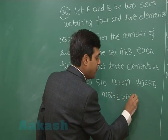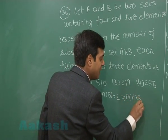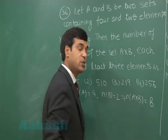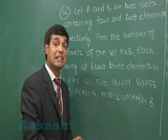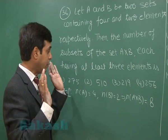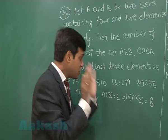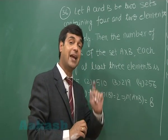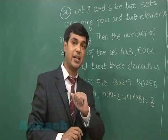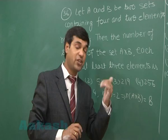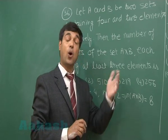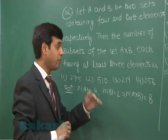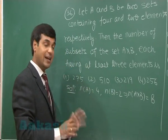Hence, the number of elements in A cross B is 4 into 2, which equals 8. Now, subsets of A cross B having at least three elements — we can select 3 out of it, or 4 out of it, or 5 out of it, and so on.